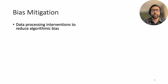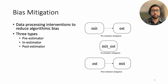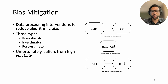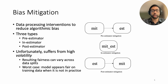Bias mitigation consists of data processing interventions to reduce algorithmic bias. Three types of bias mitigation are as follows: pre-estimator mitigation, pre-processing training data to remove bias; in-estimator mitigation, training a model resistant to bias; and post-estimator mitigation, altering model predictions to remove bias. Unfortunately, each type of mitigation suffers from high volatility, meaning that fairness can vary across data splits, and fair-seeming models only evaluated on training data can be unfair in practice. We also note that algorithmic bias is a socio-technical problem that cannot be solved by technology approaches alone, but even so, technology approaches can still be helpful.